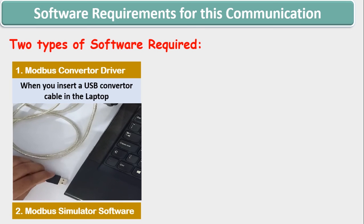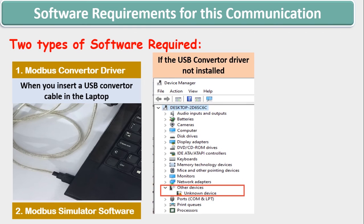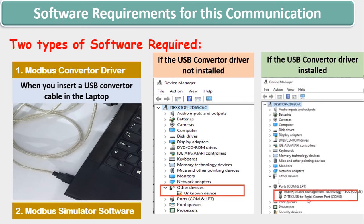Once the driver is installed, when you insert a Modbus RS-485 USB converter cable in the laptop port — if the USB converter driver was not installed or was installed incorrectly, it will give you an error of unknown device as highlighted in the device manager section of the computer. You can right-click on the unknown device and go to the option of update driver. You can update the driver by putting the driver CD in the CD-ROM or update it via online. If the RS-485 USB converter driver is installed correctly, you can see that a COM port number is assigned to your converter — in this case, COM port number 4 is given to your ZTEK USB to serial converter.